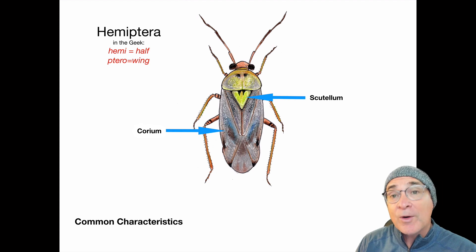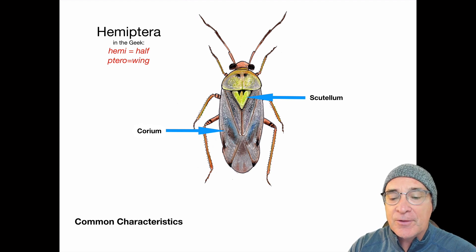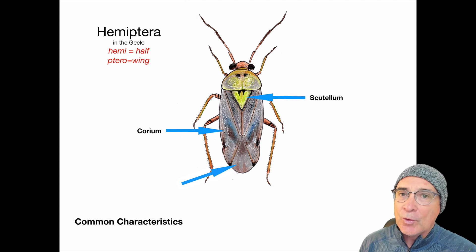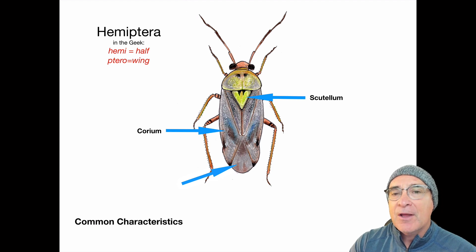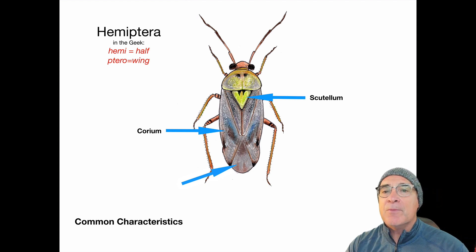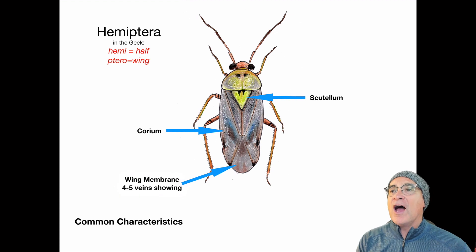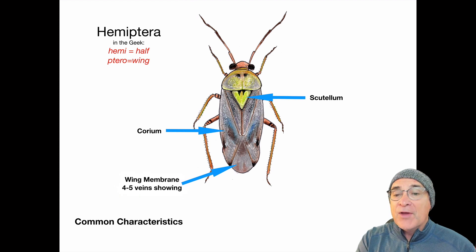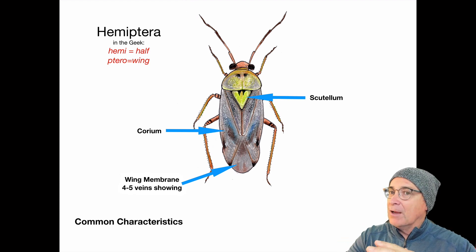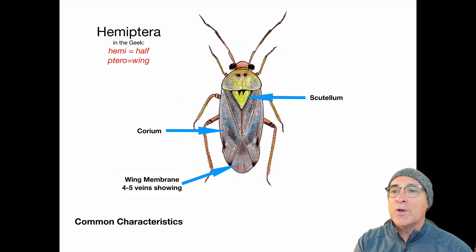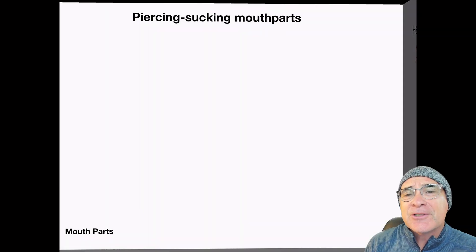That protective covering is called the corium. The corium protects the wings underneath. A very prominent feature of this sub-order is that the bottom third of the wings and the abdomen are unprotected — there's no exoskeleton covering them. You'll see four or five or more veins in the wings themselves at the apex, unlike beetles where the wings are fully covered.